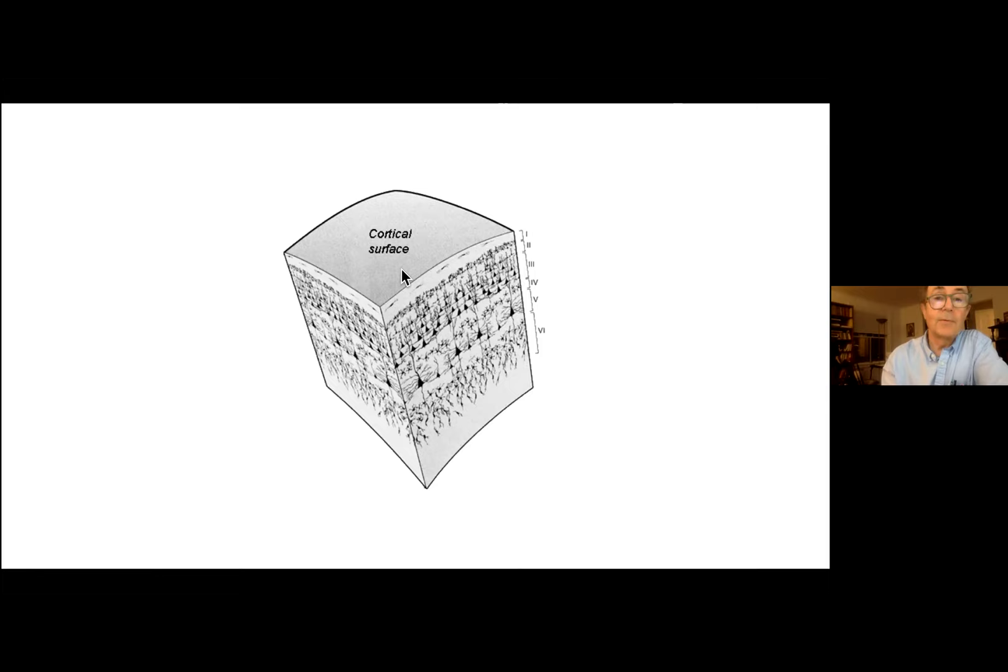For instance, one cortical mini column in the visual area of the cortex might be devoted to sensing lines in a certain orientation. And the next, the neighboring mini column would have sensitivity to a different orientation and so forth. So they all, each column does a specific, does an independent information processing task. And the same architecture evidently can be used to do many different kinds of information processing tasks.